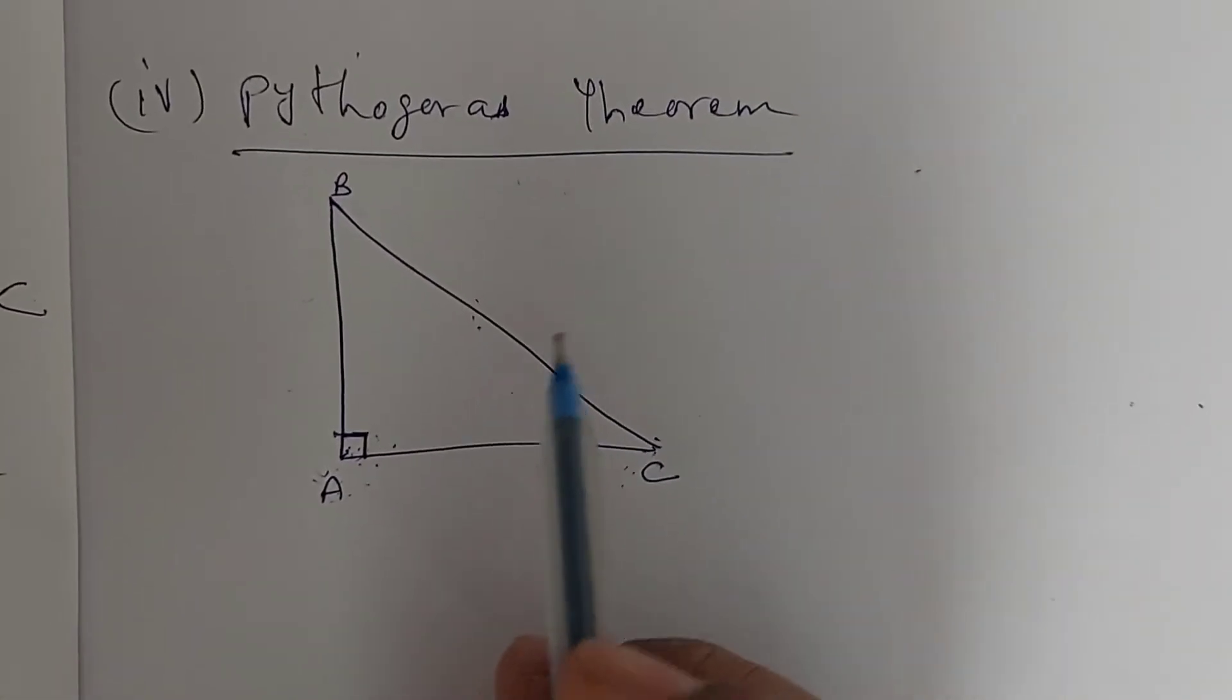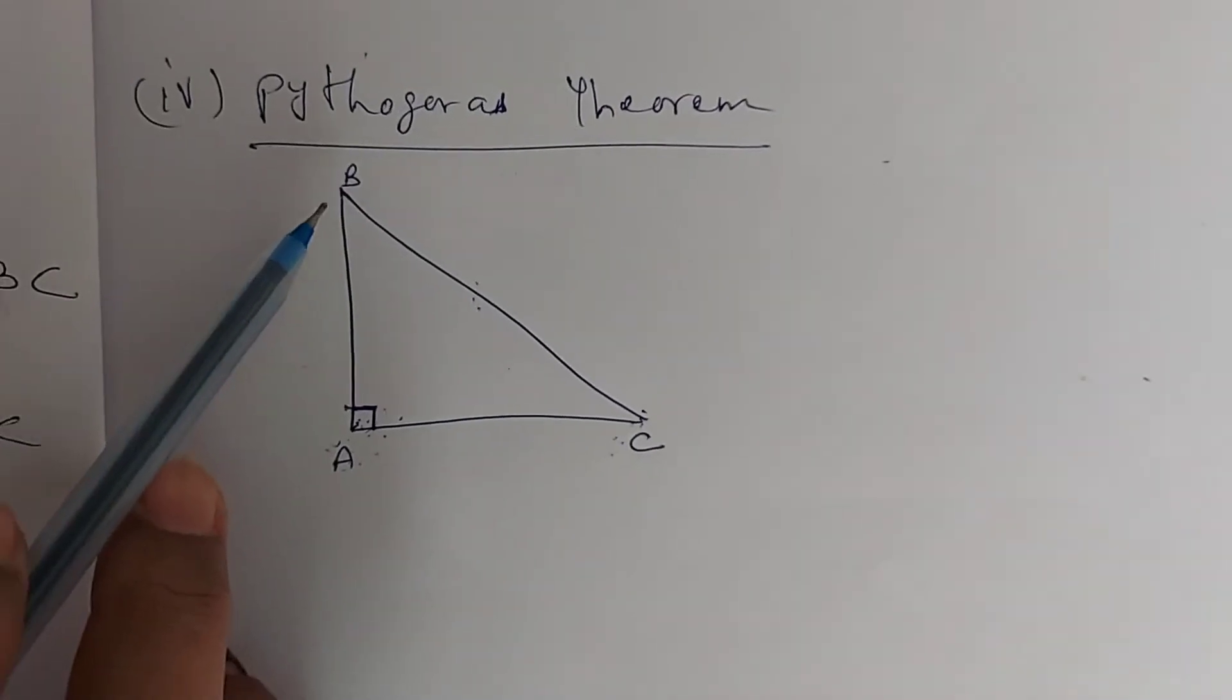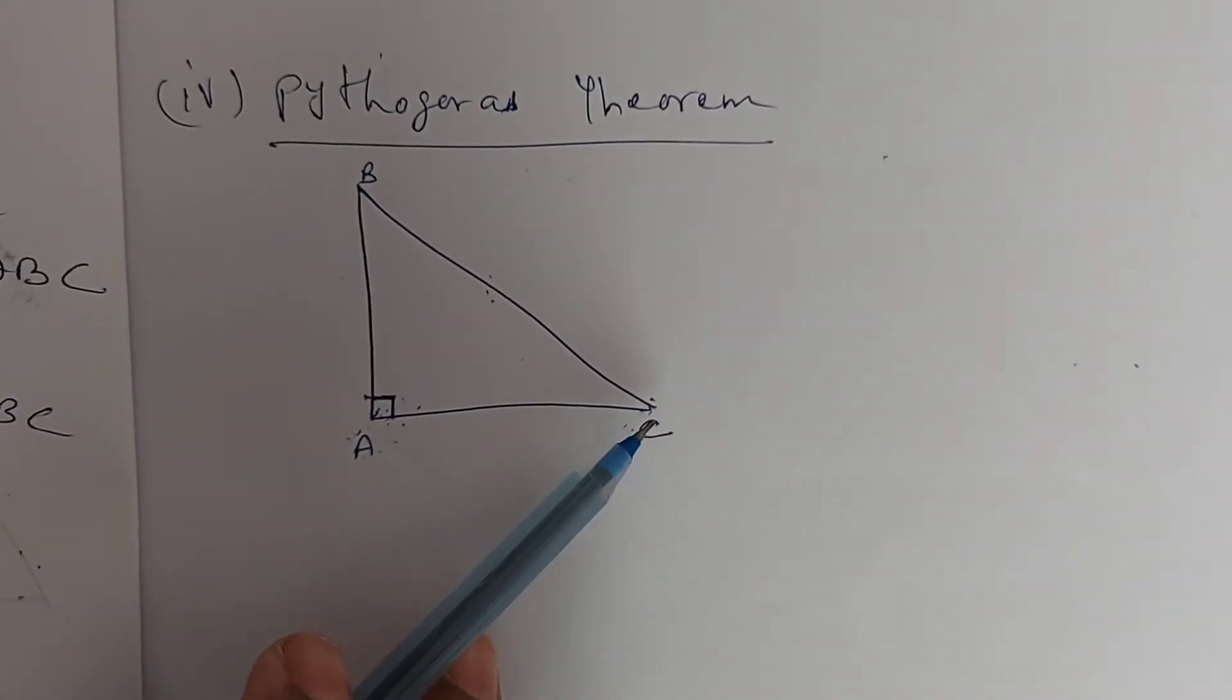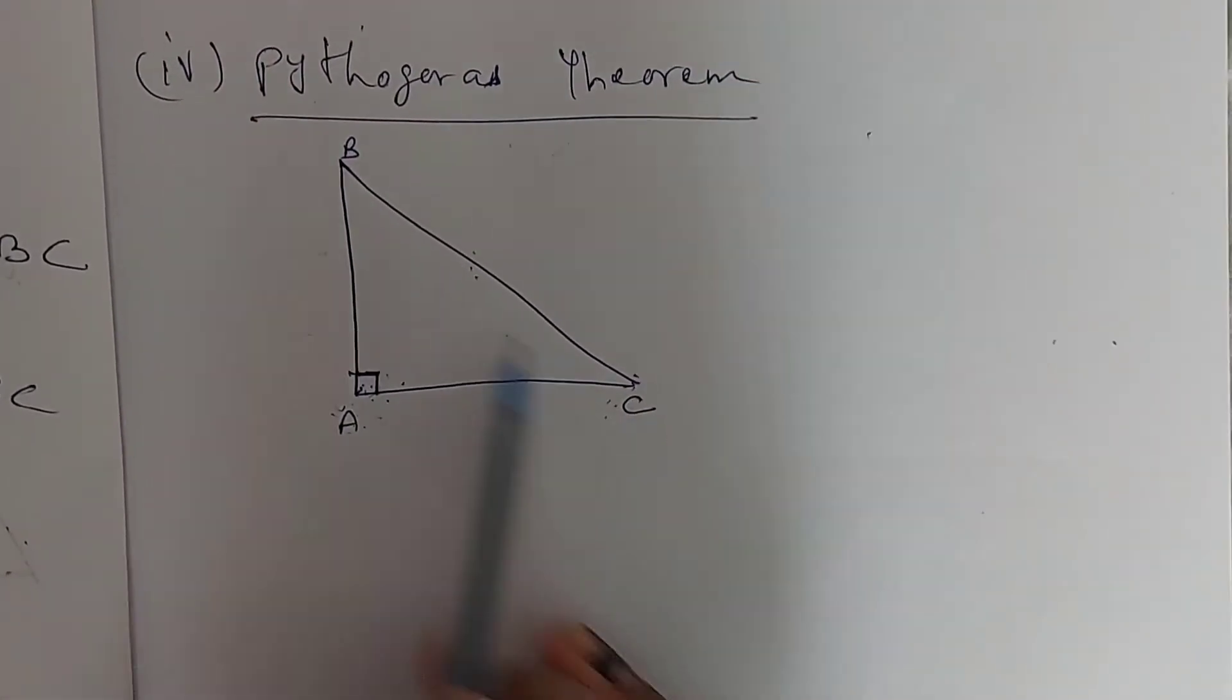Now, we will see what is Pythagoras theorem. In a right-angled triangle, the square of the hypotenuse is equal to sum of the other two sides of the right-angled triangle.